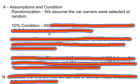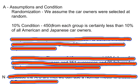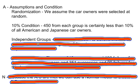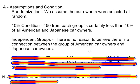The second condition is the 10% condition. We do not want our sample sizes to be any larger than 10% of the total population. 450 from each group is certainly less than 10% of all American and Japanese car owners. The next one is independent groups. When we're looking at a single proportion or mean and we look at independence, we're saying the individuals within the sample are independent. But here we need to check that the groups are independent of each other. There is no reason to believe there is a connection between the group of American car owners and Japanese car owners — you have to compare the groups, not the individuals within each group.